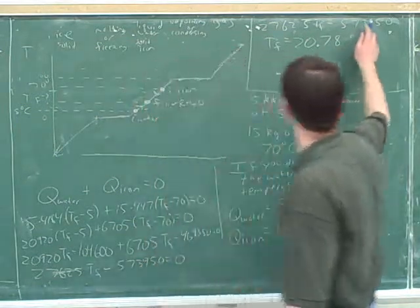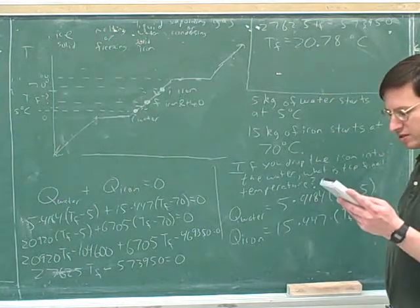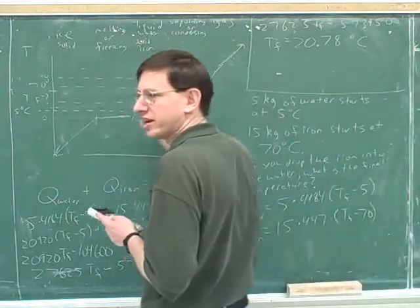Here we have a negative sign, but when you move this to the right-hand side, it gets a positive sign, and then we just divide both sides by this number, 20.78 Celsius, and that's telling us this temperature over here.